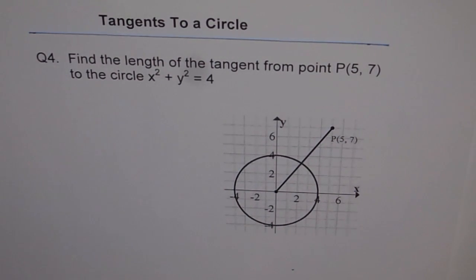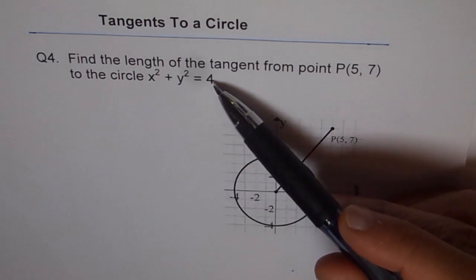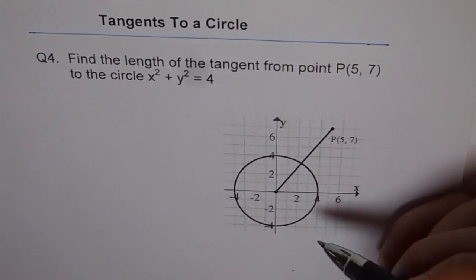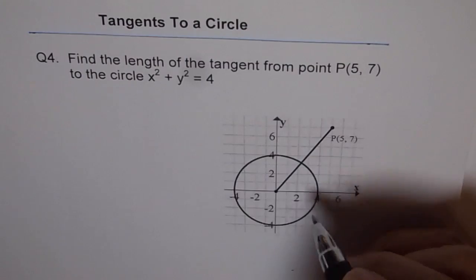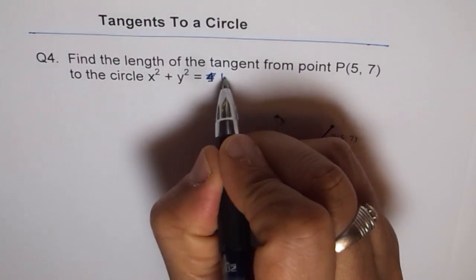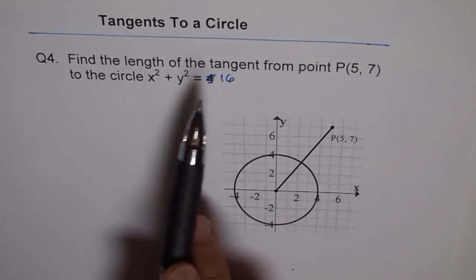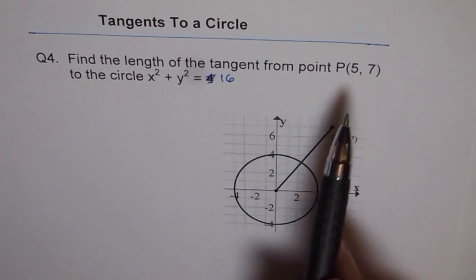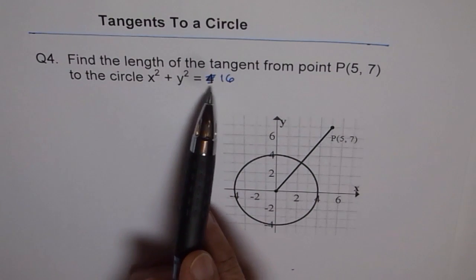As you have learned, x² + y² = 4 is a circle with center at origin and radius of square root of 4 which is 2. So the circle drawn here actually has a radius of 4, not 2. Let me change the question. I'll write 16 here. So now our question is find the length of the tangent from the point P(5, 7) to the circle x² + y² = 16.